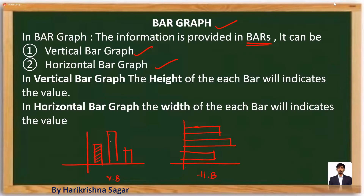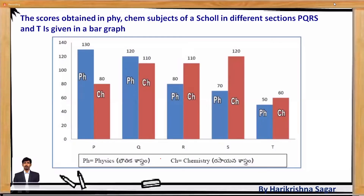Each and every category is represented with one bar. In a vertical bar graph, the height of each bar indicates the value. In a horizontal bar graph, the width of each bar indicates the value.